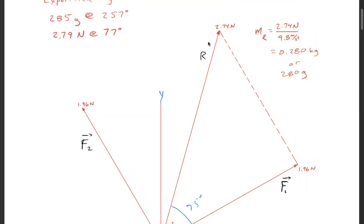And if we draw the resultant, I measured it to be 2.74 Newtons. The 2.74 Newtons divided by 9.8 meters per second squared gives 0.28 kilograms or 280 grams.